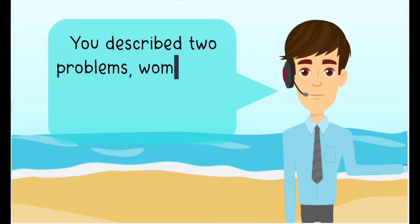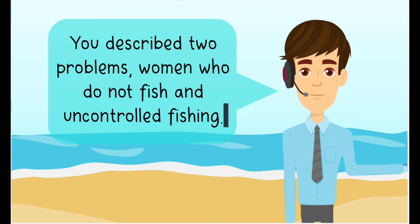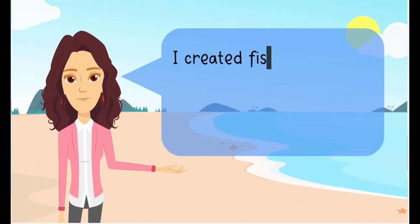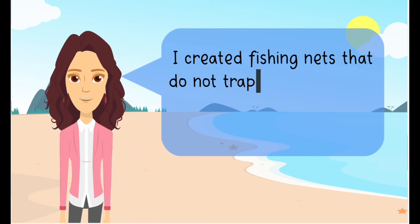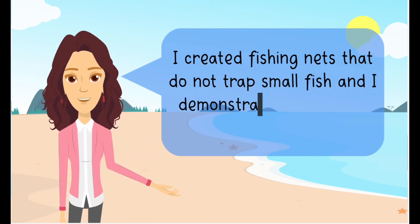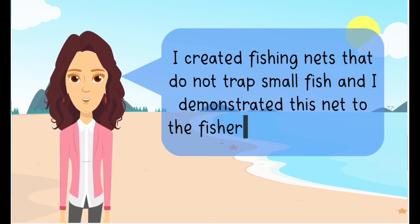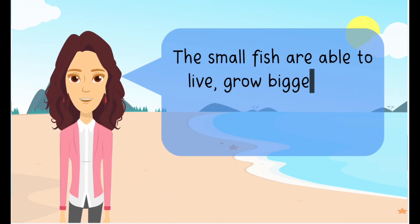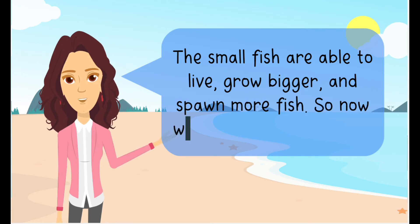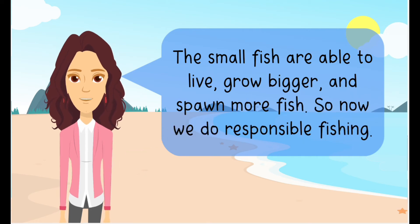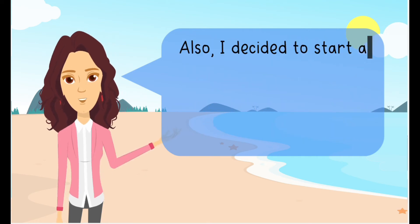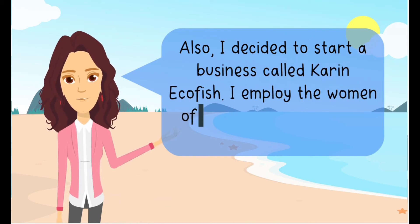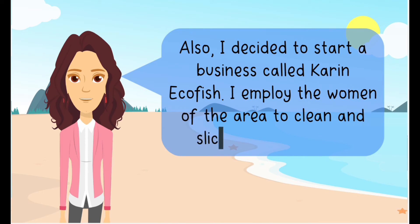Women who do not fish and uncontrolled fishing. How do you solve these two problems? I created fishing nets that do not trap small fish and I demonstrated this net to the fishermen in Pucusana. The small fish are able to live, grow bigger and spawn more fish. So now we do responsible fishing. Also, I decided to start a business called Karin EcoFish. I employ the women of the area to clean and slice the fish I catch.